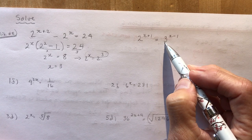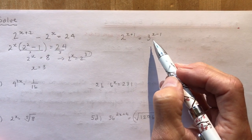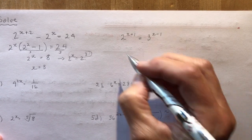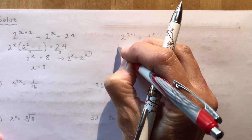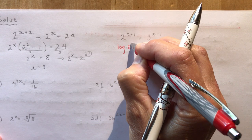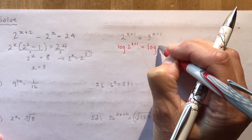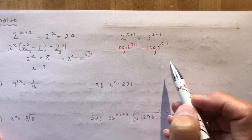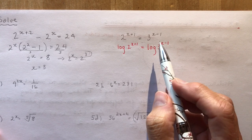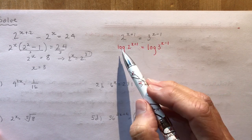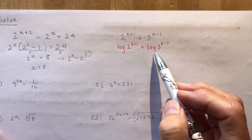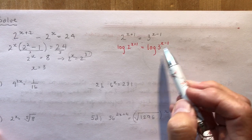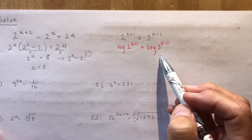Next: 2 to the (x+1) equals 3 to the (x−1). This is where you need to jump in with logs. Take the log of both sides: log of 2^(x+1) equals log of 3^(x−1). A good rule of thumb — when you're stuck on an exponential equation, take the log of both sides; and when you're stuck on a logarithmic equation, write it in exponential form.